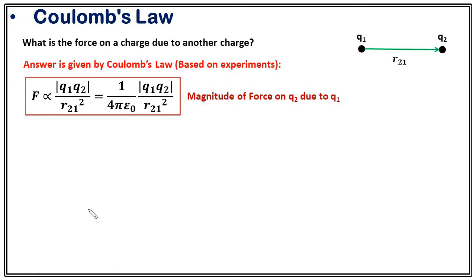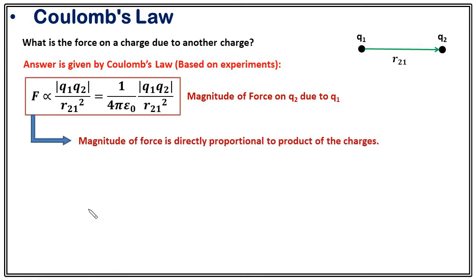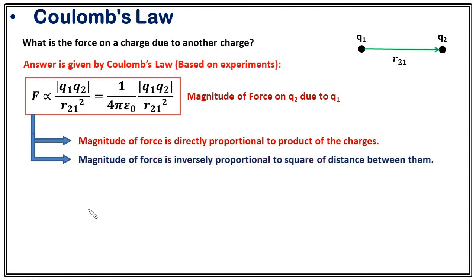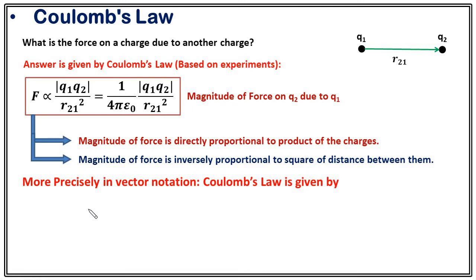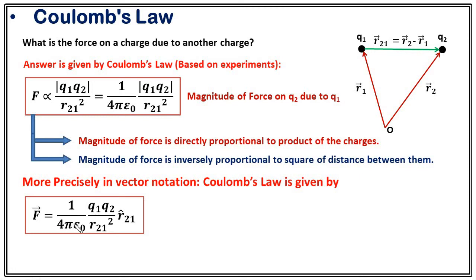In statement form: the magnitude of force is directly proportional to the product of the charges and inversely proportional to the square of the distance between them. But since force is a vector quantity, in the precise definition we must use vectorial notation. More precisely, in vector form, Coulomb's law is given by F = (1/4πε₀) × (q1 q2 / r21²) × r̂21.